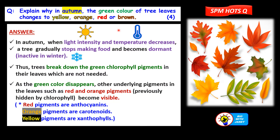Here is a hot question that may come out in the exam — school exam or SPM. Please take note: it's from the textbook. Explain why in autumn the green colour of tree leaves changes to yellow, orange, red, and brown. In autumn — and remember, there are countries with four seasons: spring, summer, autumn, winter. In spring and summer the leaves are green, but slowly in autumn the green colour gradually disappears and we get yellow, orange, red, or brown coloured leaves.